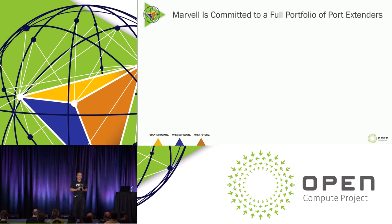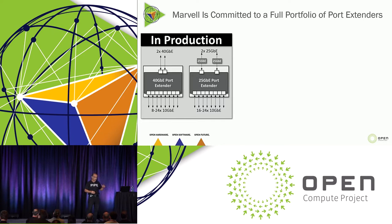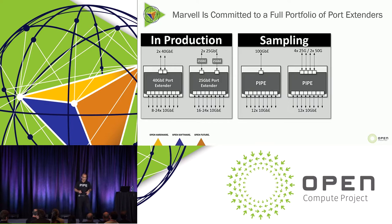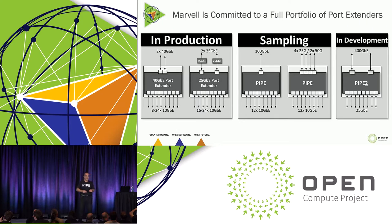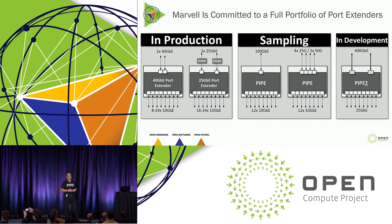PIPE is the first product in the portfolio that Marvell is launching. We are committed to this space and to overhauling the network edge. We already have in production the 40-to-10 Gig and the 25 Gig-to-10 Gig. We are now sampling the PIPE — the Passive Intelligent Port Extender — which is 100 Gig / 25 / 50 to 12×10 Gig, already in customer designs. In development, we are solving the harder problem: 400 Gig or 56 Gig upstream to 25 Gig downstream connection to servers, storage, and compute. We will keep innovating and developing port extenders with a broad family.